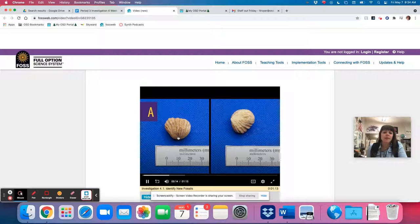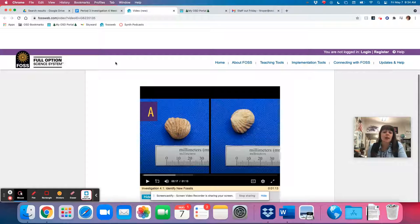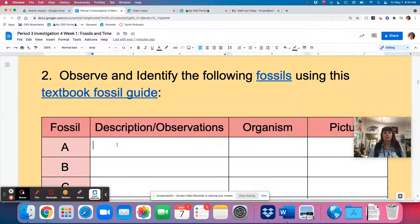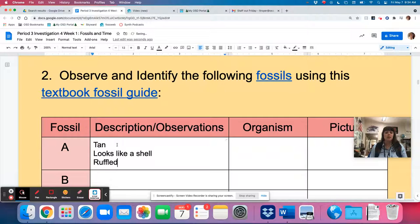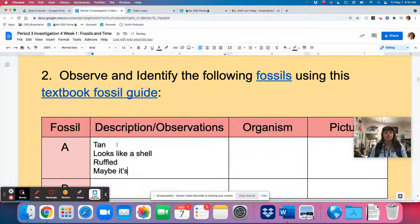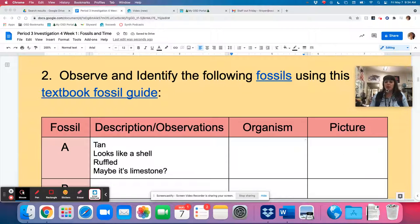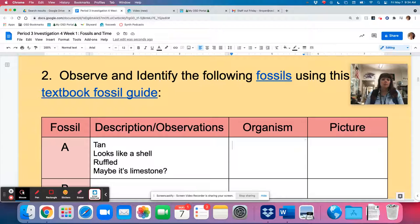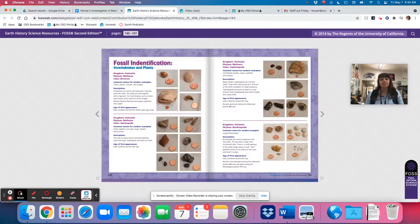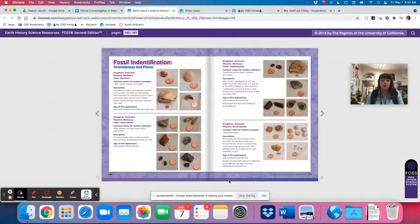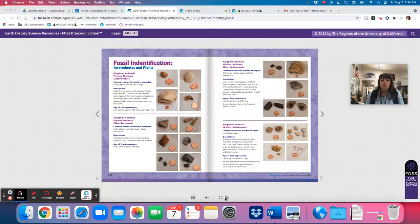And you're going to try to identify them using the fossil identification guide in your book. So you'll observe them, you'll record some observations about them. Hit pause. So for A, description observations, it's tan. Looks like a shell. Ruffled. Maybe it's limestone. And then in order to figure out the organism, I have to use my fossil guide.